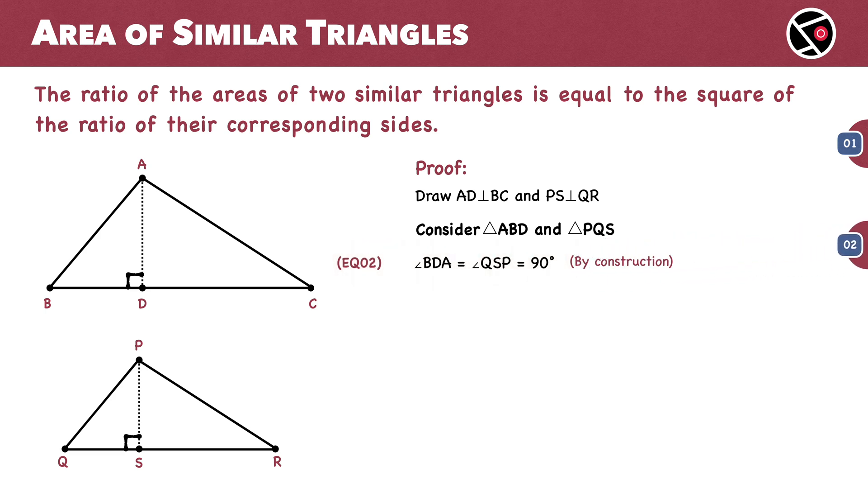Angle ABD equals Angle PQS. Why? Because triangle ABC is similar to triangle PQR, and corresponding angles of similar triangles are equal. This is equation 3.